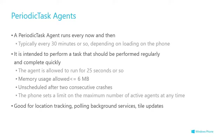Periodic tasks run every now and then — more specifically, maybe every 30 minutes or so, depending on the phone. If your 30 minutes comes up and you're in power save mode or have no wireless, you might be out of luck. These tasks must complete quickly — no longer than about 25 seconds — and can't use more than 6 megabytes of memory. The device will shut it down after two consecutive crashes. There are great uses: location tracking, pulling down small amounts of background data, uploading data, sending logging or error information back to the server, and tile updates.